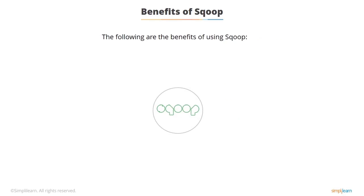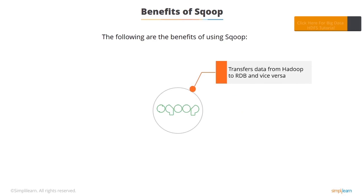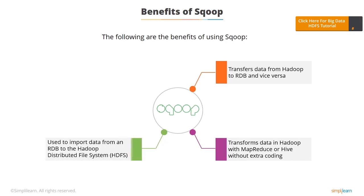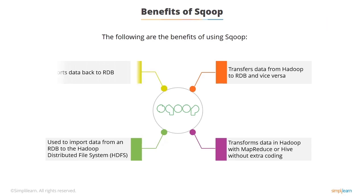Let's look at the benefits of using Sqoop. It transfers data from Hadoop to an RDB and vice versa. It transforms data in Hadoop with the help of MapReduce or Hive without extra coding. It is used to import data from an RDB such as SQL, MySQL, or Oracle into the Hadoop Distributed File System, or HDFS. It also exports data back to the RDB.